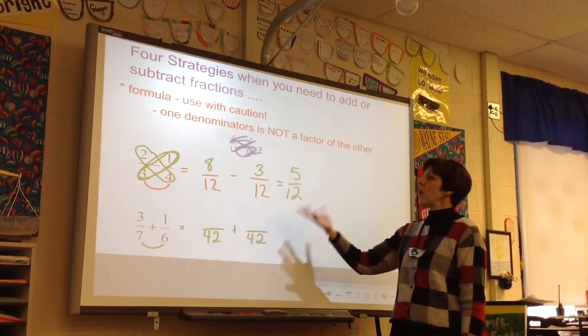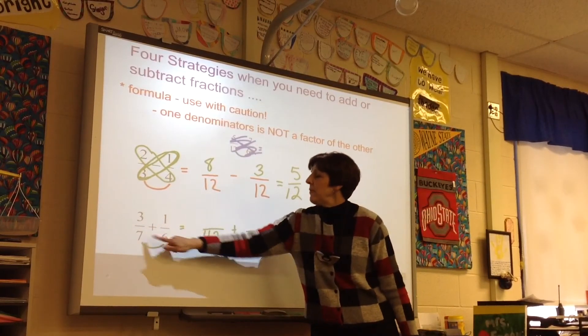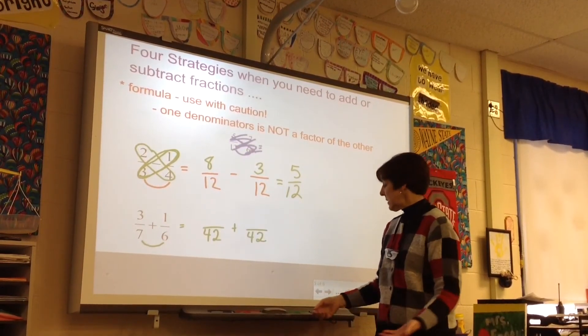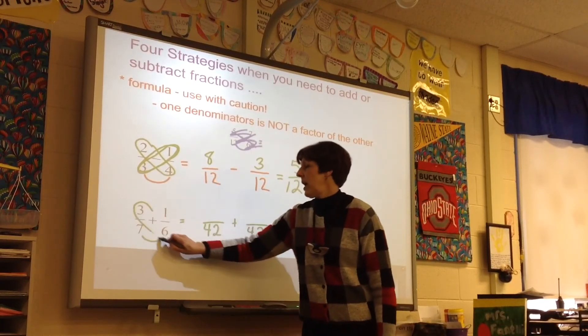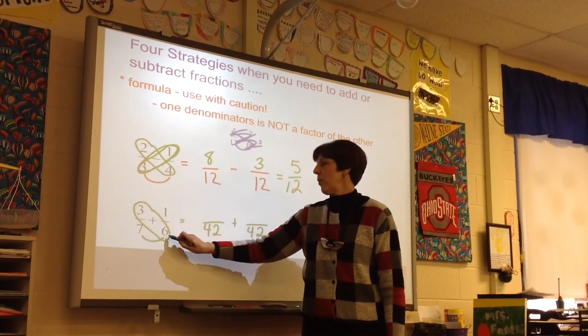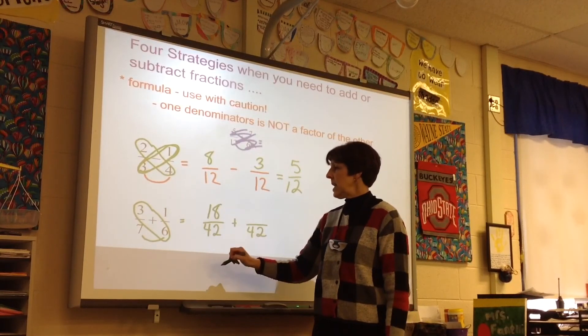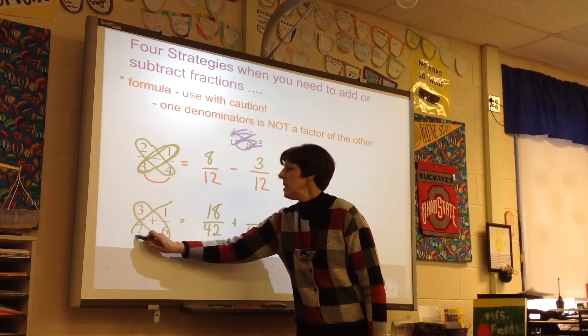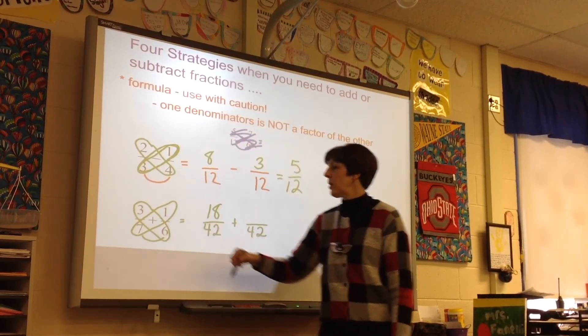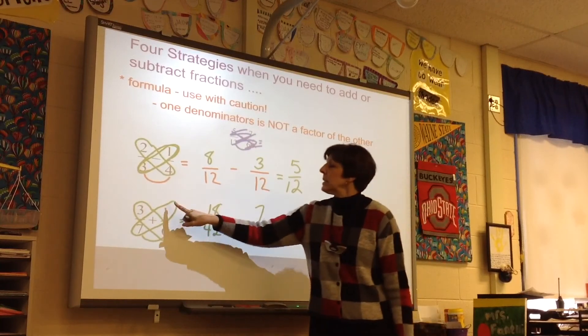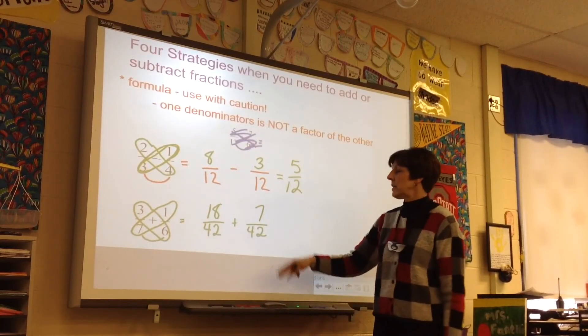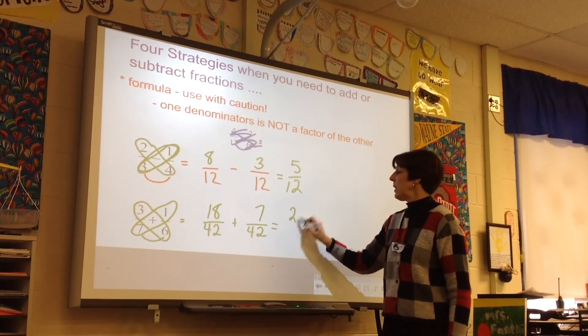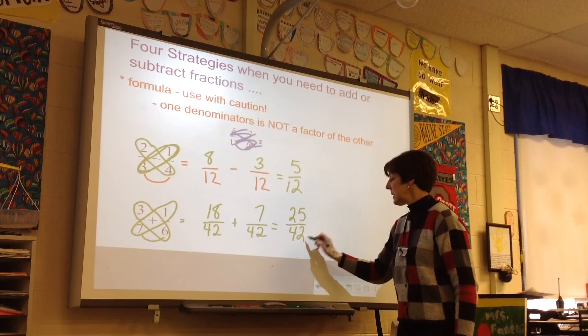Finally, the formula really does work well when you have denominators that are not factors of each other, like a 7 and a 6. 7 times 6 is 42. The strategy says numerator 1 times denominator 2 for 18. 18 forty-seconds is equal to 3 sevenths. Then denominator 2 times numerator 1 for 7. 1 sixth has an equivalent fraction of 7 forty-seconds. When you add those together, you would get 25 forty-seconds.